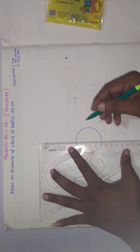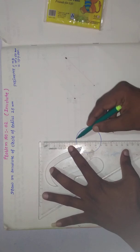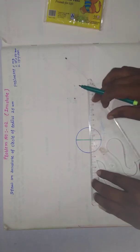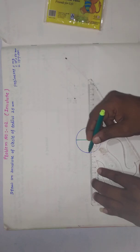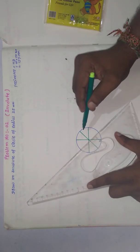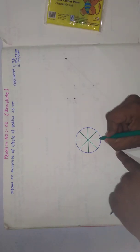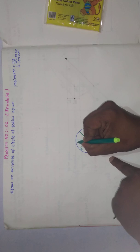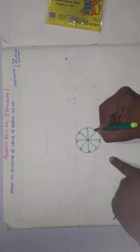Now divide this circle into eight equal parts. You can divide the circle into twelve equal parts or eight equal parts — here I am taking only eight parts. Name these points as zero, one, two, three, four, five, six, seven, and back to point number eight.